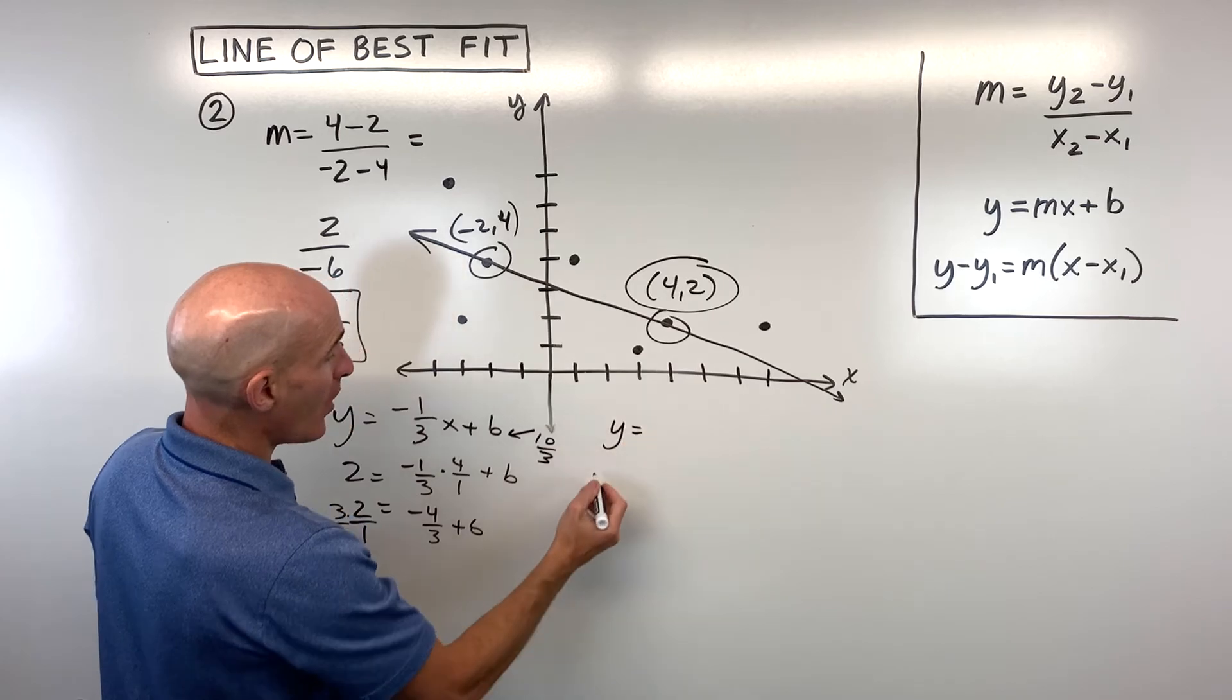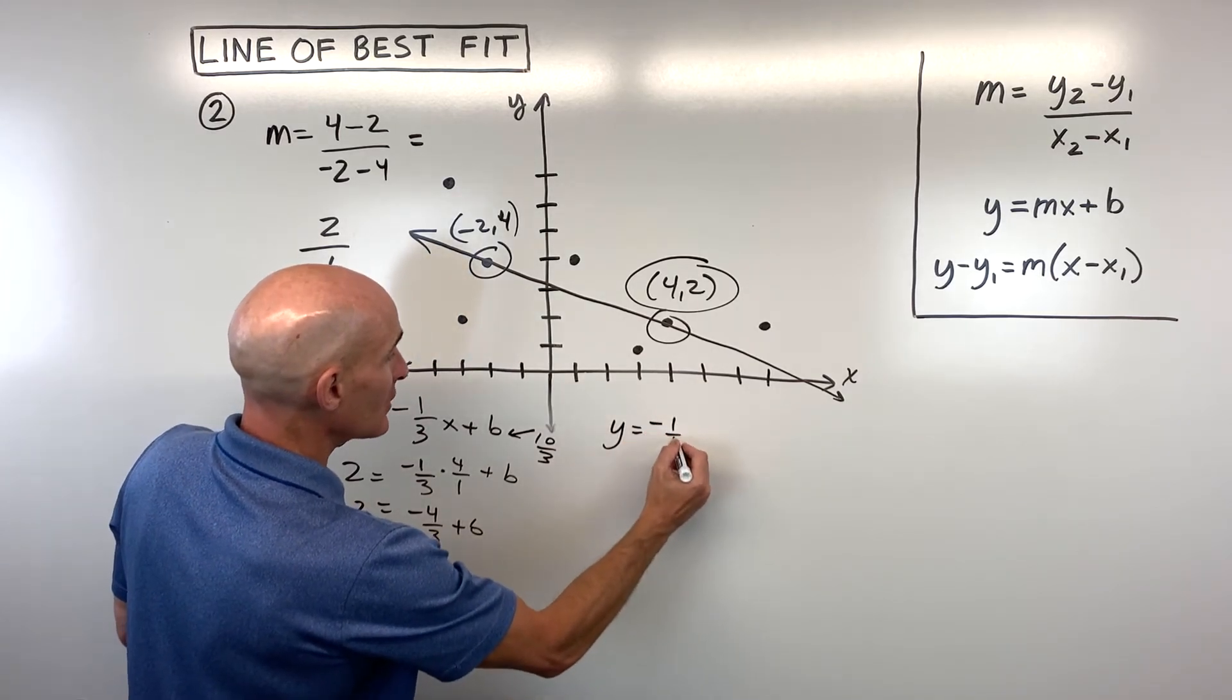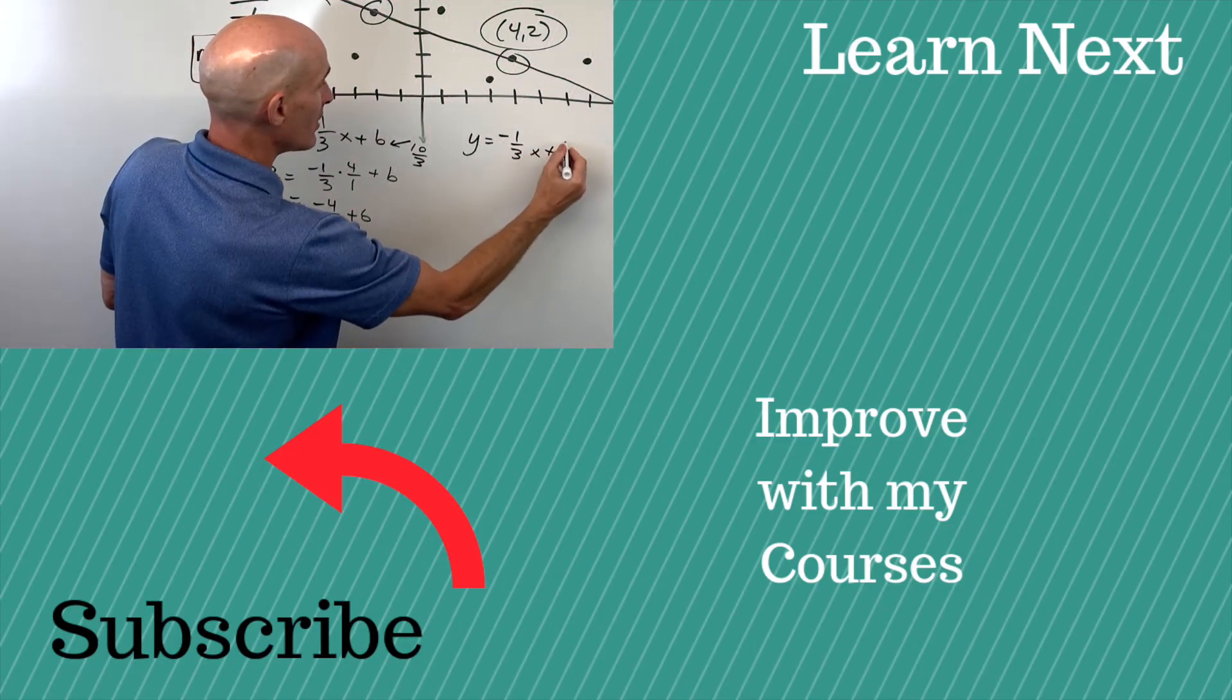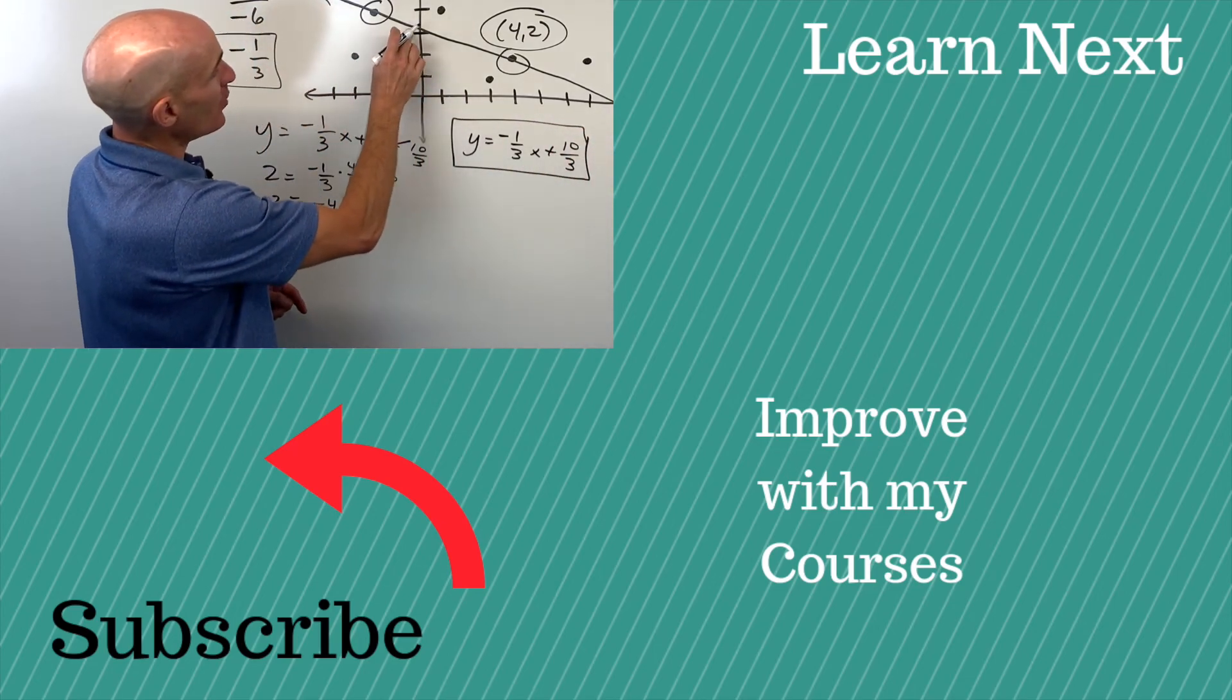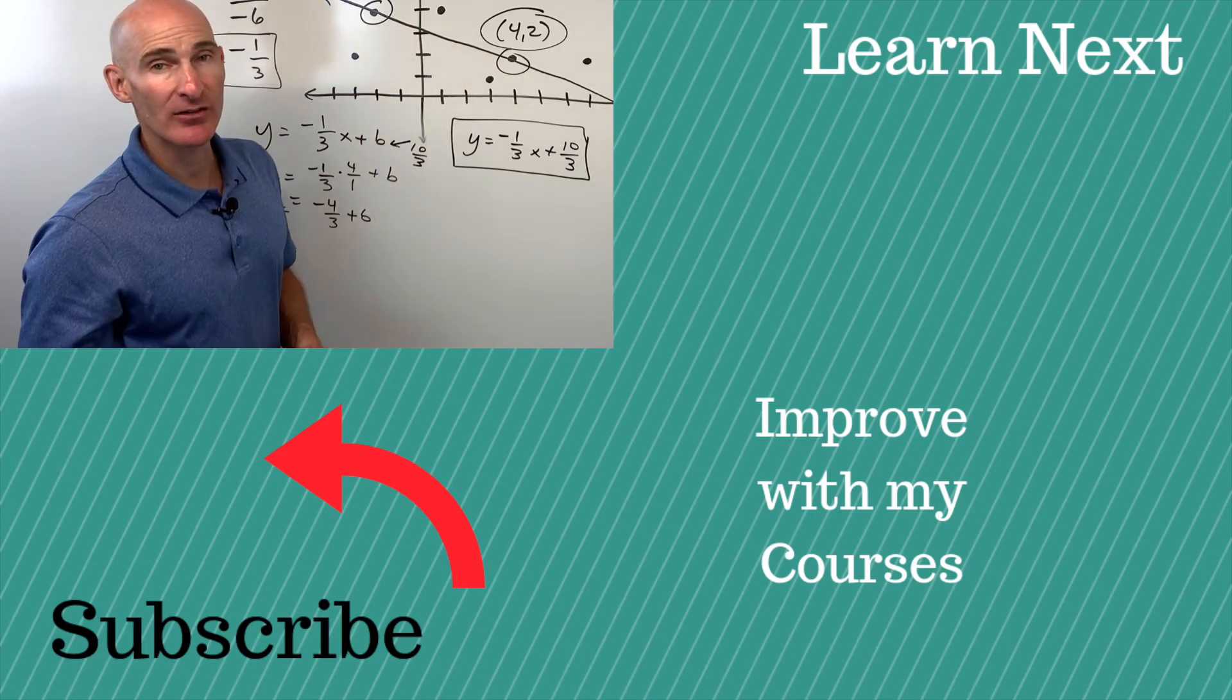So now when we write our equation, y is equal to negative 1/3 x plus 10/3. And you got it. 10/3 is 3 and 1/3. So see, it's crossing slightly higher than 3.